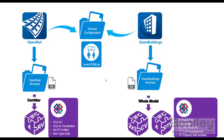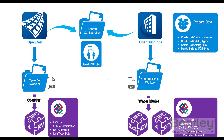Before doing that, we need to prepare the data. If we don't want to use the default definition, we can create rail custom properties, catalog types, and catalog items, and map them to building IFC entities before exporting. Let's check what to do.